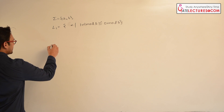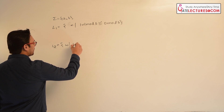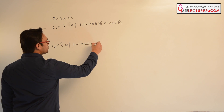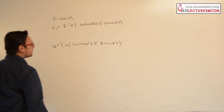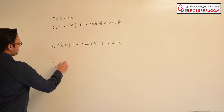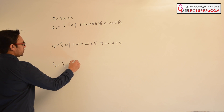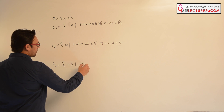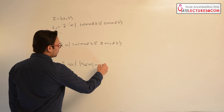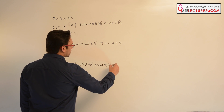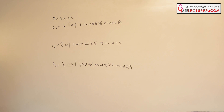The second language is L2 = {w | length of w mod 3 ≡ 2 mod 3}. Then we have L3 = {w | number of a's in string w mod 2 ≡ 0 mod 2}. Let us examine what strings are present in each of these three languages.